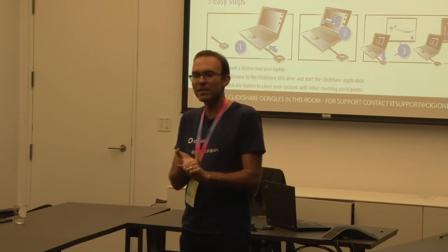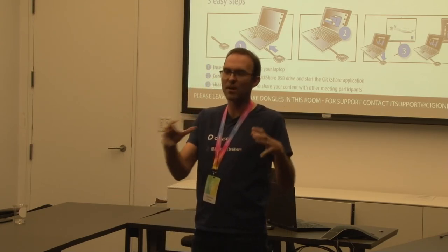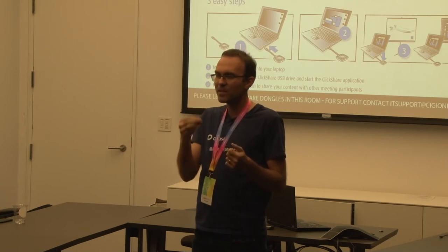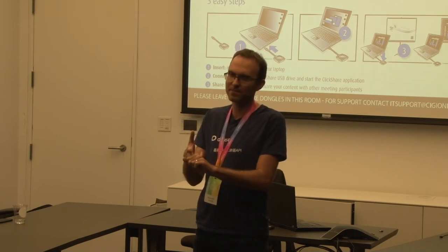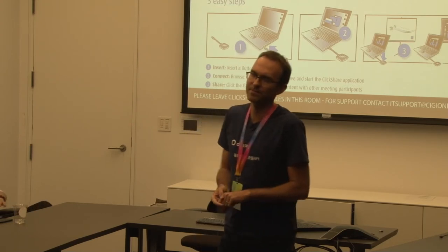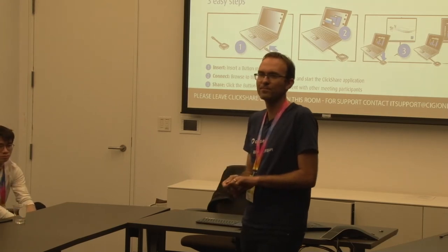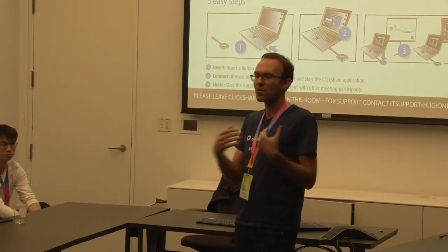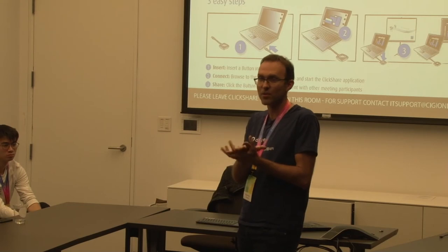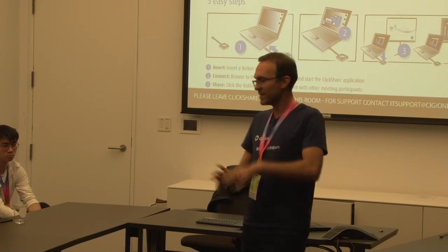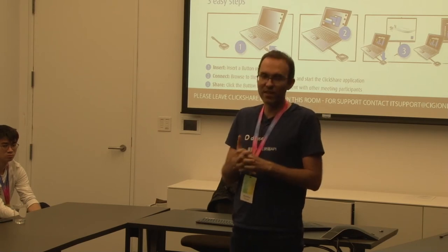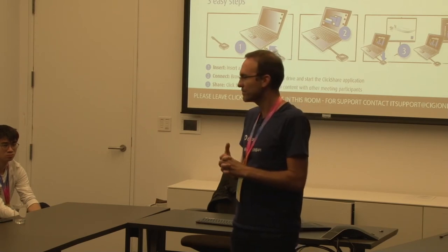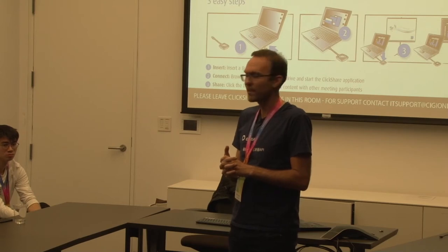Right now, we've released the platform and the different components on EOS — we have seven networks there. We have a few private networks for customers. On Ethereum, we've released on Mainnet and Ropsten. We're looking at other chains. Our focus is developers — we're making tools not for token holders, our focus is great developer tools.